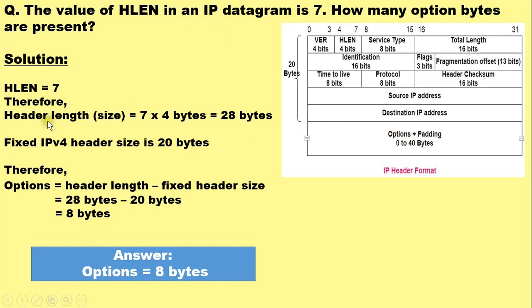Now we know that the header length or header size is always the HLEN field value multiplied by 4 bytes. And here in this case it is 28 bytes. So the header size is 28 bytes, which is more than 20 bytes.